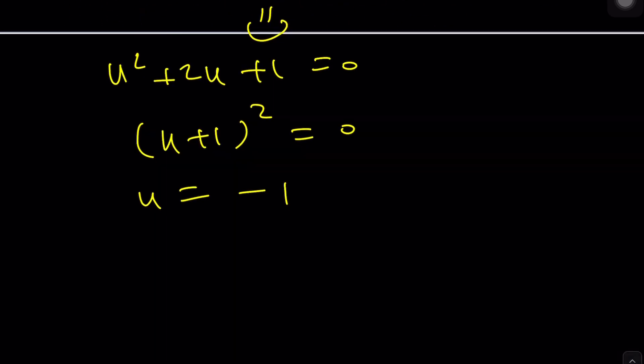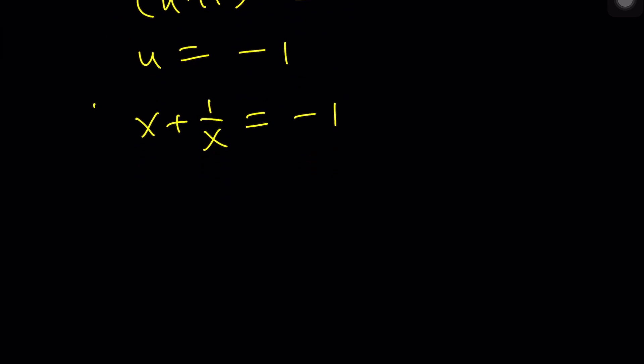And from here we get u equals negative 1. What is u though? u is x plus 1 over x, so x plus 1 over x equals negative 1. So again, does that prove that it's the square of that expression? Yes and no. If you look at this very carefully, if this condition is satisfied, what does that mean from a polynomial perspective?